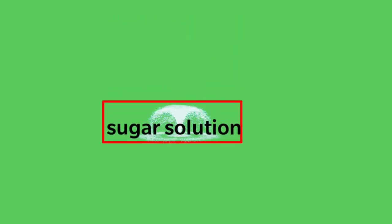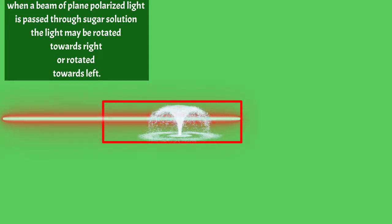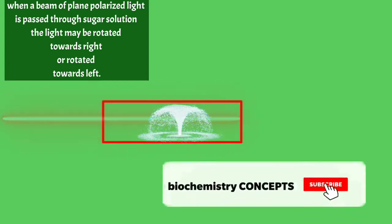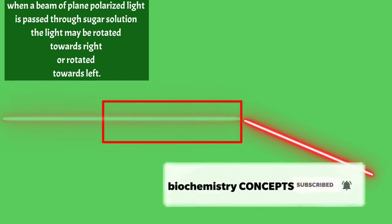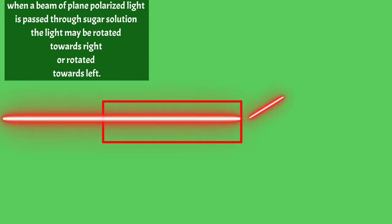For example, you can see here, there is a sugar solution and when light is passed through this sugar solution, the light may be rotated towards right or in clockwise direction, or the light may be rotated towards left or in anti-clockwise direction.